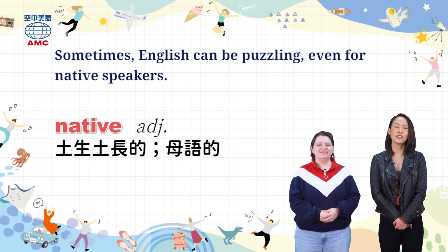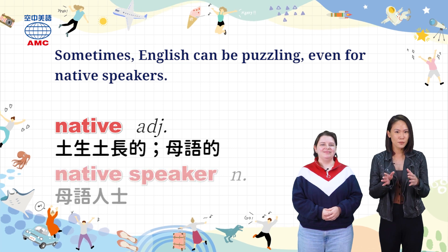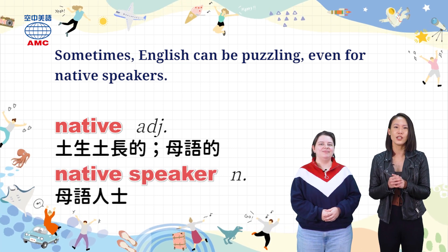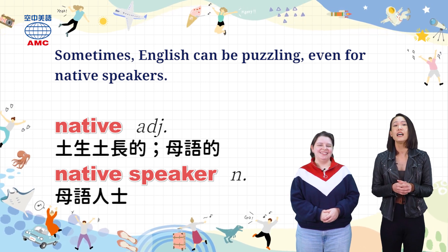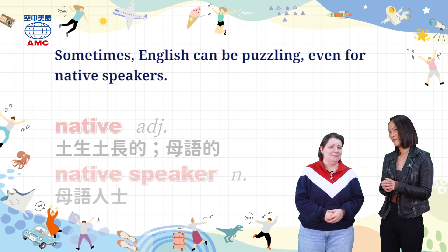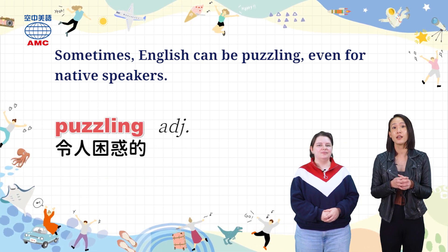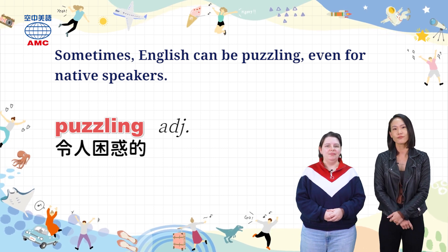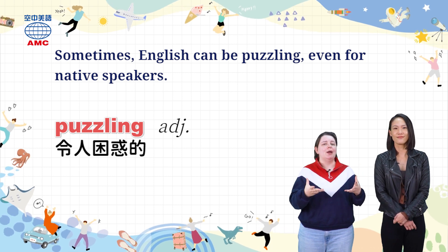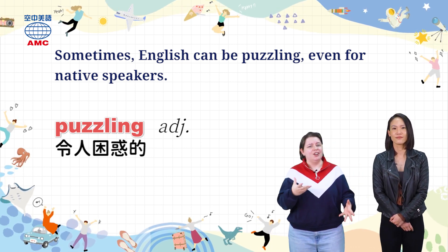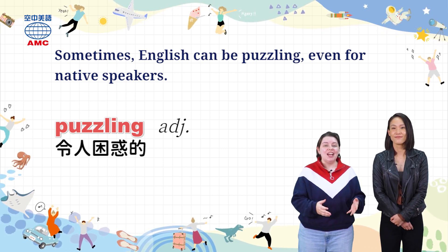我们看到了native，它是一个形容词，代表土生土长的或是母语的。所以native speaker指的就是母语人士。Nicole说的是她是英文的母语人士，而我是中文的。形容词puzzling指的是令人困惑的，you can also say it can be confusing sometimes. I like that word puzzling — it's like a puzzle, you gotta put all the pieces together and figure out what it really means.